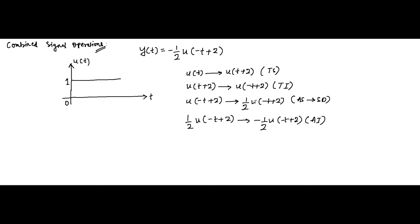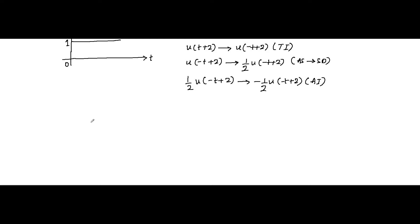We will go through it step by step. First, we perform time shifting. Whenever time shifting is performed, any signal u(t+2) means the signal has to be shifted. The plus sign indicates the signal has to be shifted to the left by 2 units.